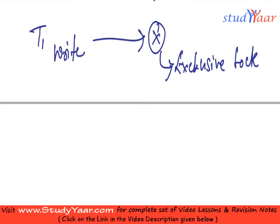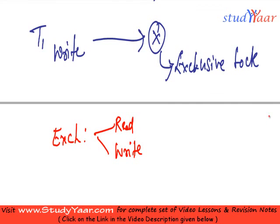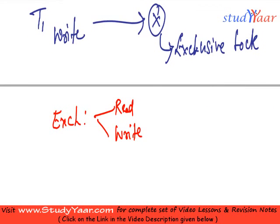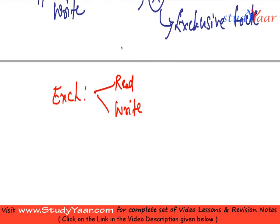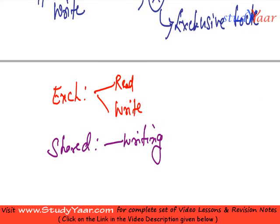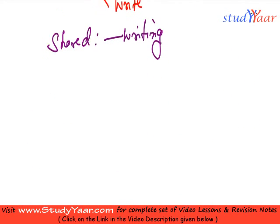An exclusive lock allows you to read as well as write X. A shared lock is only used for reading X. So how does a lock ensure mutual exclusion? It ensures mutual exclusion by — let's say data item X is locked in an exclusive lock.